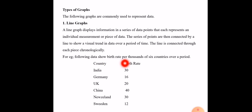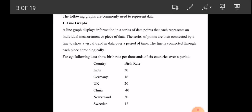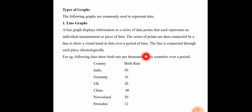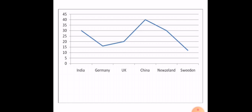Following the data shows birth rate per 1000 of 6 countries over a period. In India, it is 30. In Germany, it is 16. This is the birth rate in different countries. Let's look at the graphical representation.